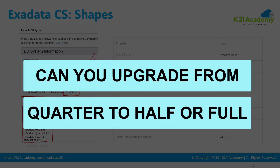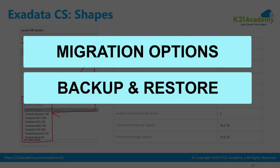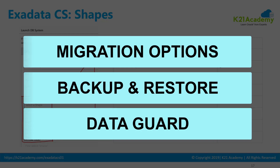One question I get repeatedly in our trainings is: can you go from quarter rack to half rack, or from half rack to full rack, or directly from quarter to full? Technically yes, but in-place upgrade is not possible. What you need to do is provision a new half rack or full rack and then do a database export/import to migrate your databases to the higher-spec machine. It's always advisable to pick the appropriate spec — quarter, half, or full rack — depending on where you want to be in the next two to four years. You can also use Data Guard to migrate from one shape to another.